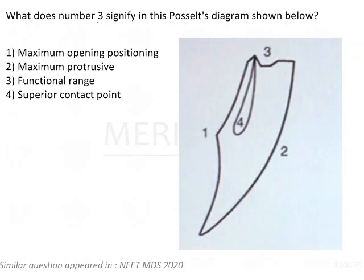What does No. 3 signify in Posselt's diagram shown below? No. 3 is here, and we have a cross-sectional diagram of mandibular movement.